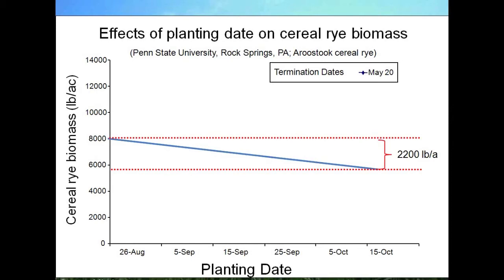Here's another illustration of that same data showing how important planting date can be. On the y-axis is cereal rye biomass and on the x-axis the planting date. Just going from an early August planting date to October, we can lose almost 2,500 pounds of biomass per acre.